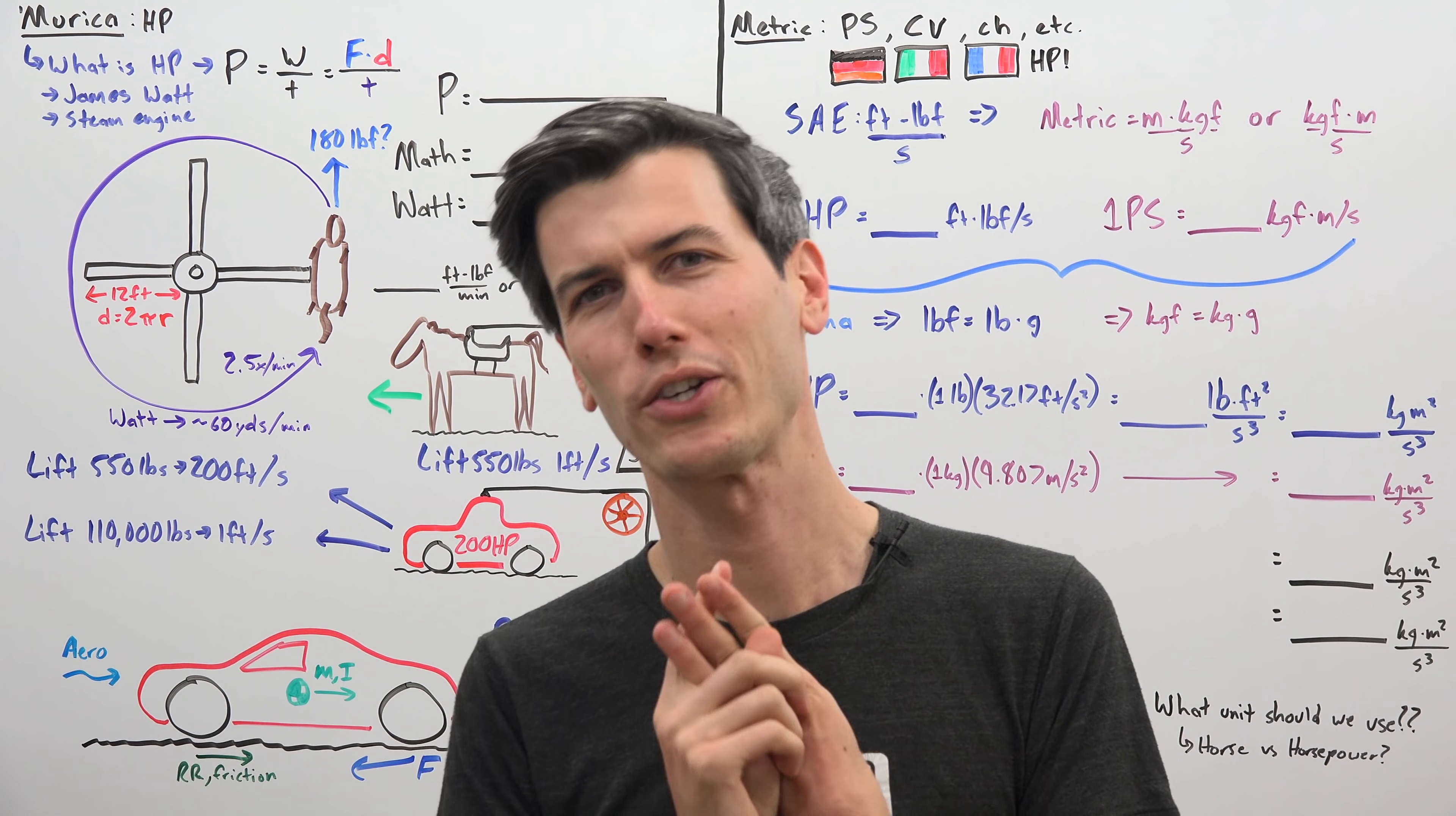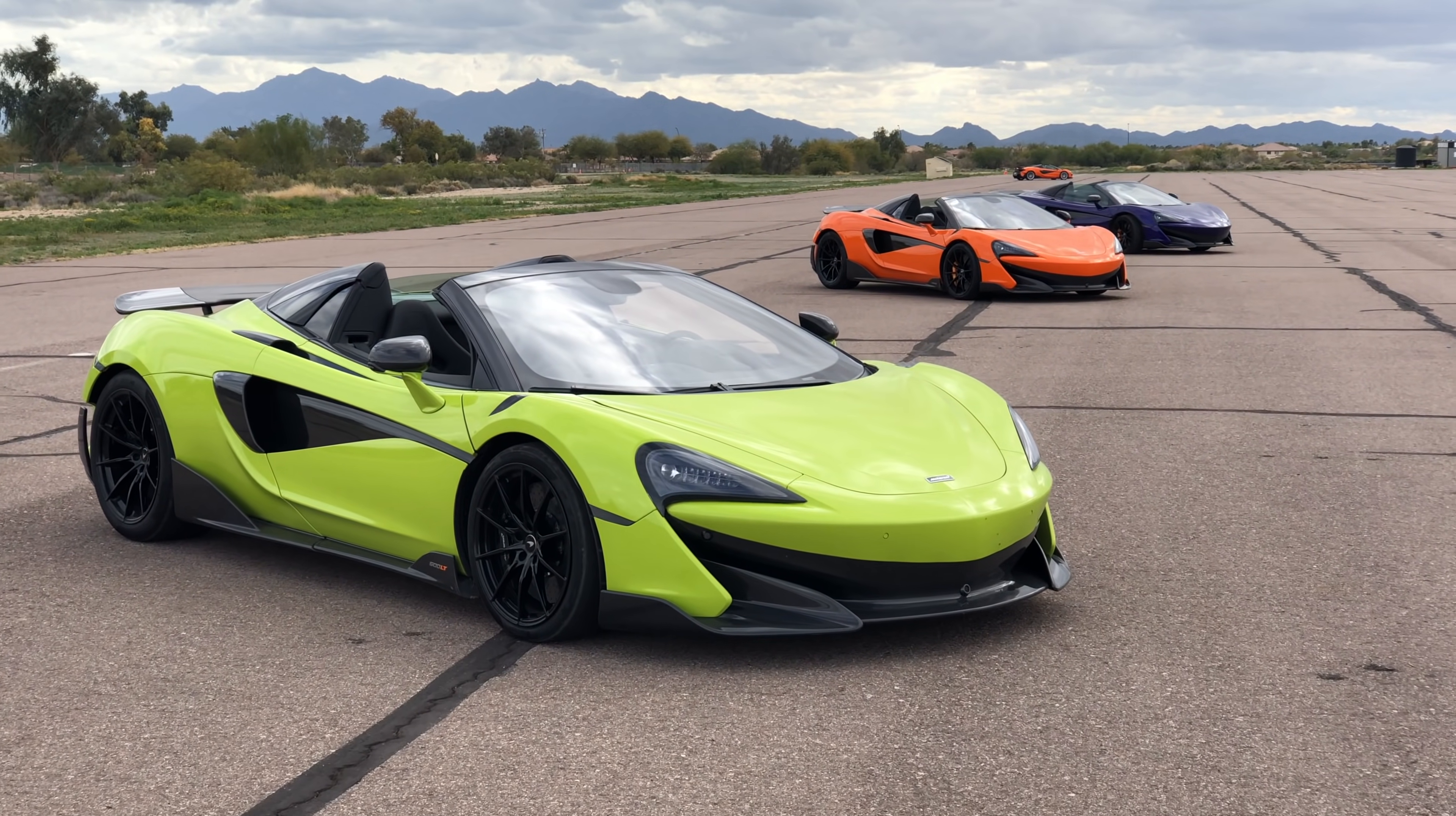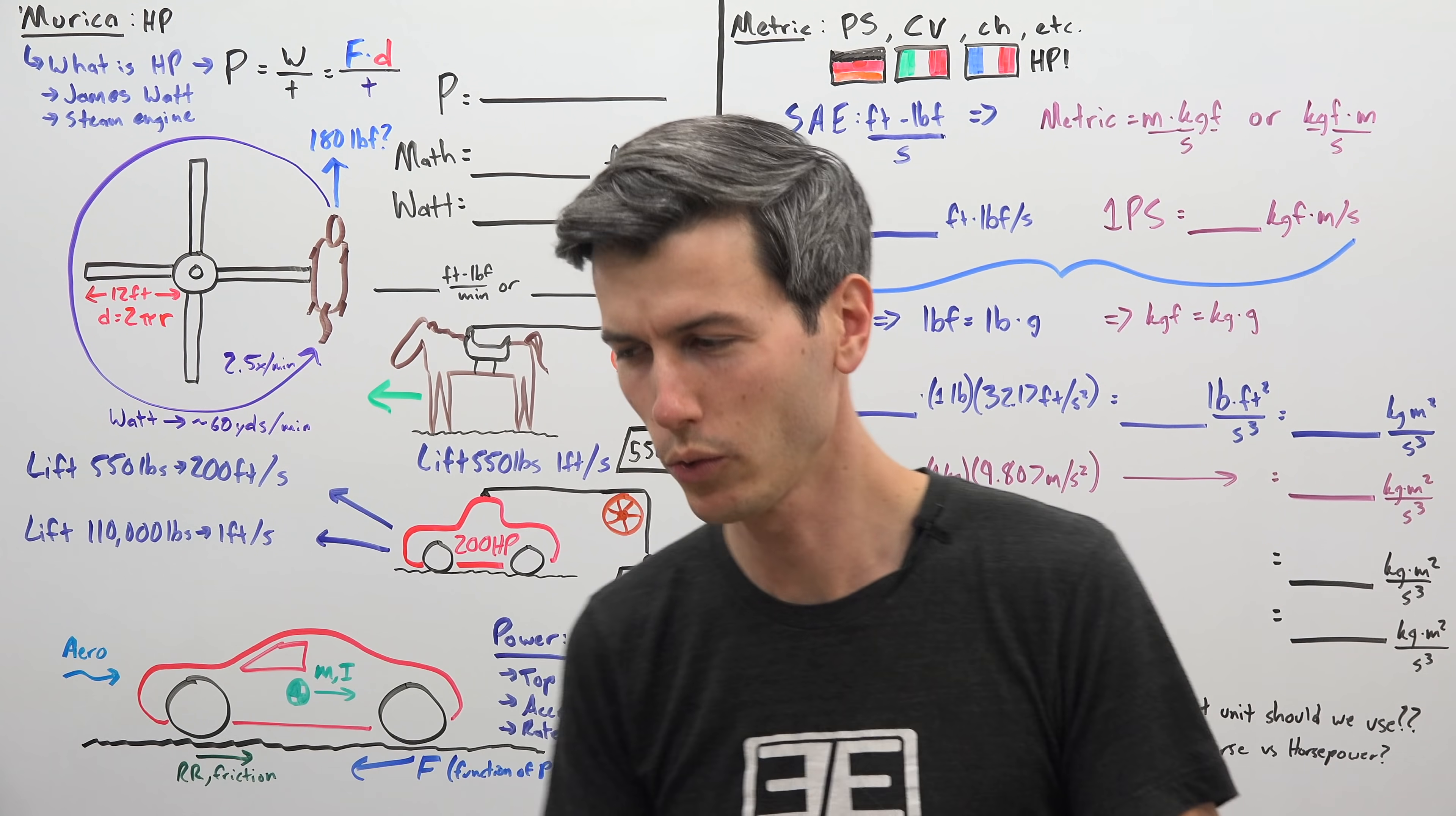So we're going to be focusing on three questions in this video. First of all, what is horsepower? Second of all, why does a car that's sold in America and sold in Europe have a different horsepower rating in each country when it's the exact same car? And then our third question is, why is all of this nonsense here on the whiteboard pointless and what unit should we be using?